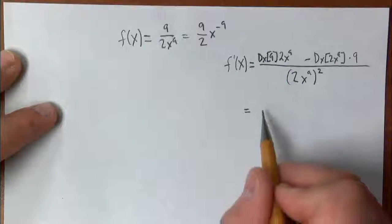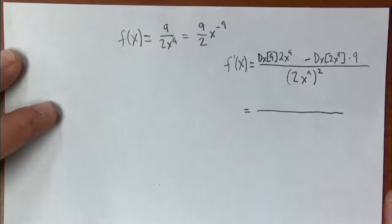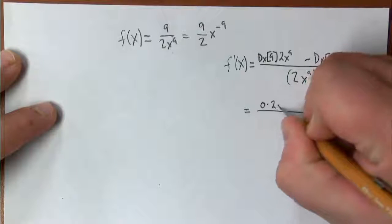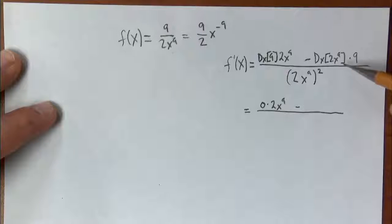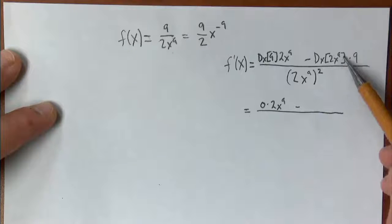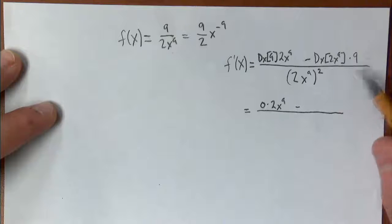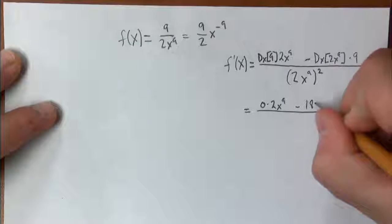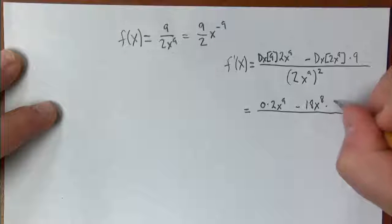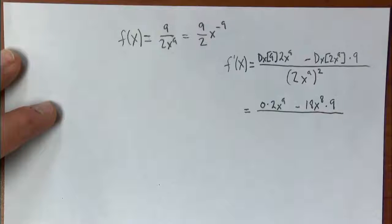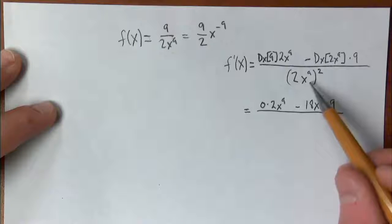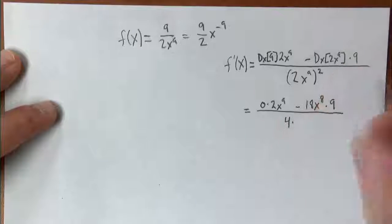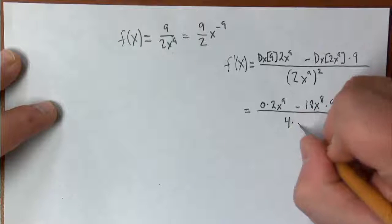So the derivative of 9 times the top function 2x to the 9th, minus the derivative of 2x to the 9th — that's a power rule situation. The derivative of 9 is 0, and the derivative of 2x to the 9th gives us 18x to the 8th. Times 9 on the numerator.